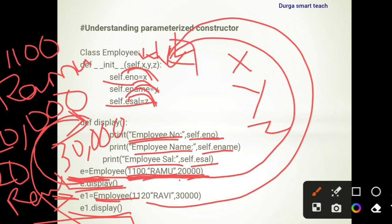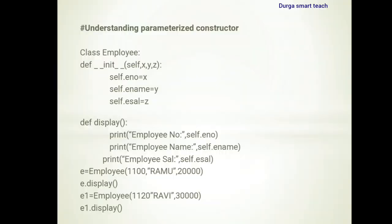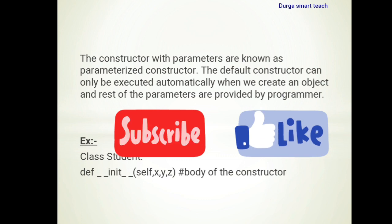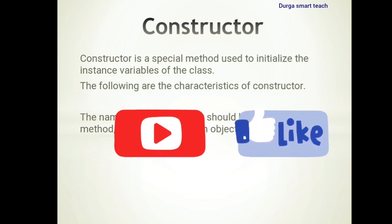A class is a blueprint which contains variables and functions. One class can be used for many objects. This is all about the importance of constructors — the main aim of a constructor is to initialize the variables whenever the object is created. There are two types: the default constructor, which does not contain any parameters, and the parameterized constructor, which does. If you have any doubts, please comment below. For more videos, please subscribe to my channel. Thank you.